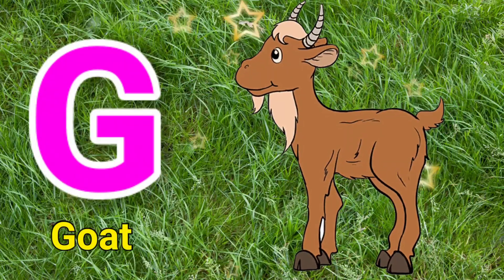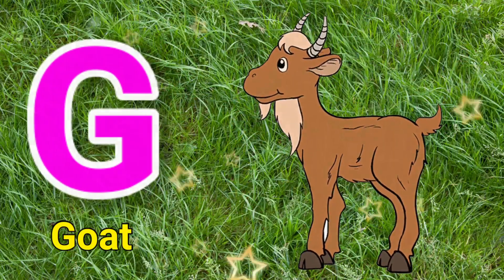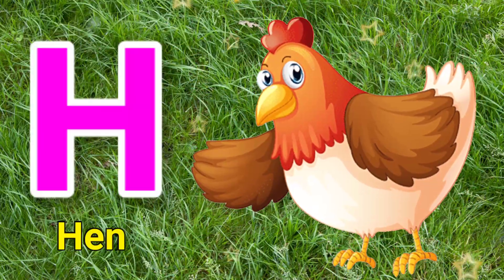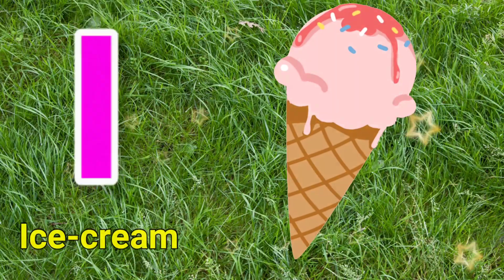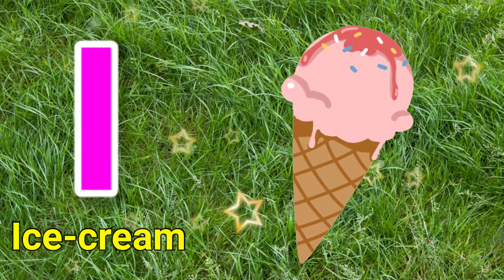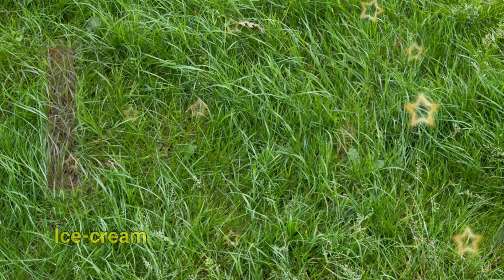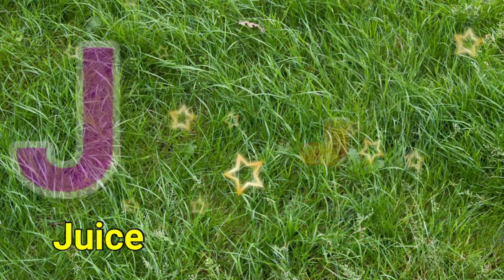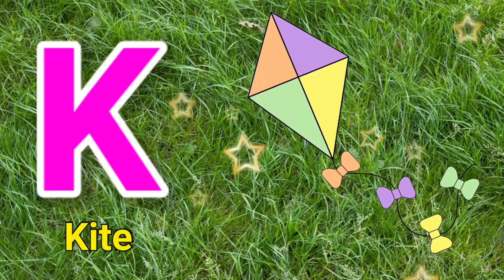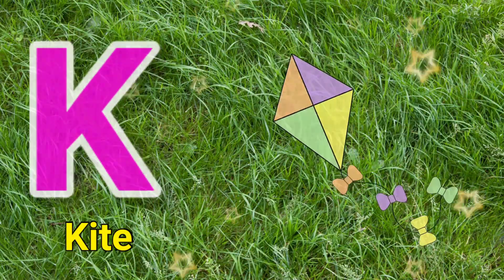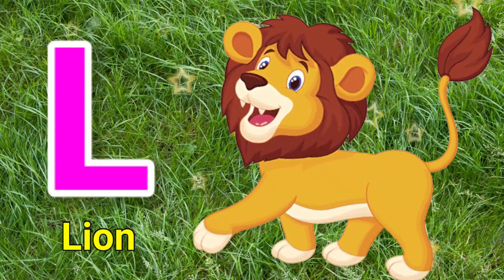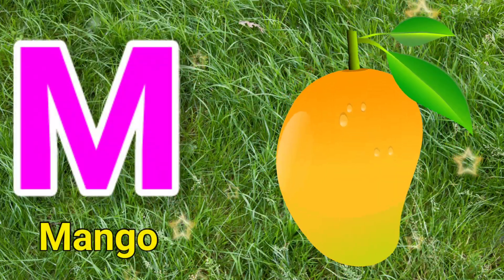G for goat, H for hen, I for ice cream, J for juice, K for kite, L for lion.